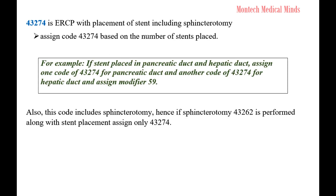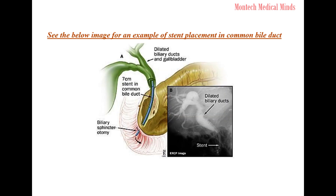CPT Code 43265 is ERCP with destruction of stones by mechanical lithotripsy, as seen in the image below. CPT Code 43274 is ERCP with placement of a stent, including sphincterotomy. Assign code 43274 based on the number of stents placed — for example, if a stent is placed in the pancreatic duct and another in the hepatic duct, assign one code of 43274 for the pancreatic duct and another code of 43274 for the hepatic duct, and assign modifier 59. This code includes sphincterotomy; therefore, if sphincterotomy (43262) is performed along with stent placement, assign only 43274. See the image below for an example of stent placement in the common bile duct.